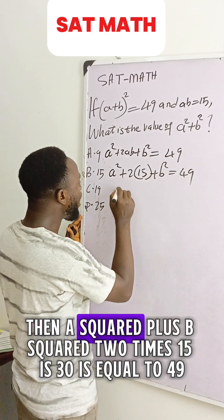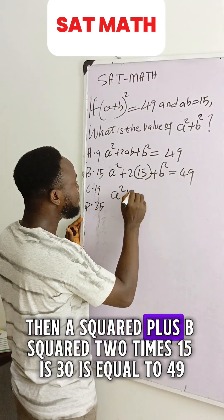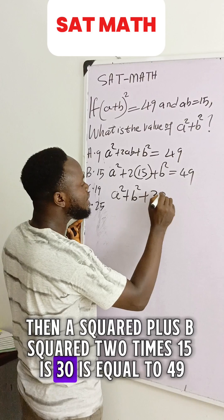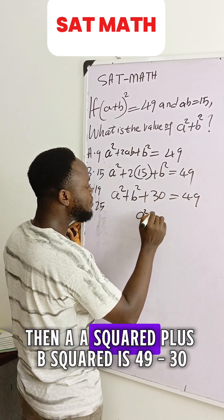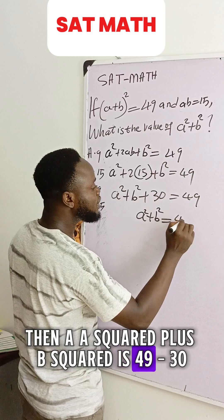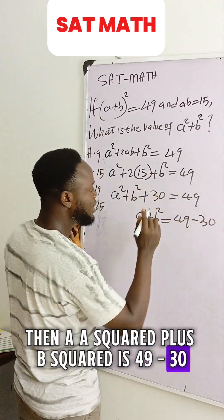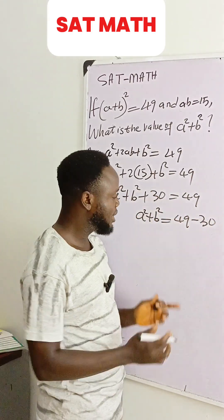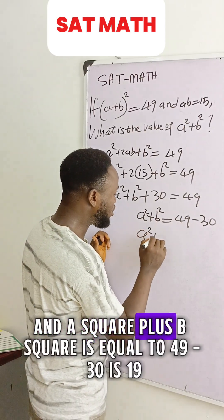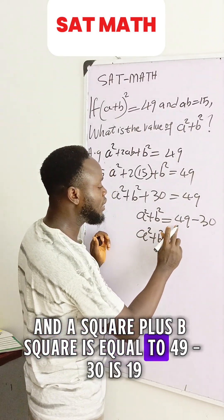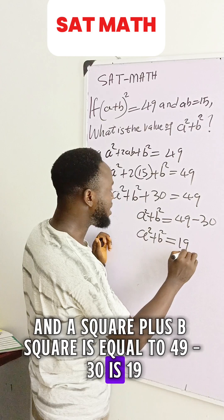Then a squared plus b squared, 2 times 15 is 30, is equal to 49. Then a squared plus b squared is 49 minus 30, that is collection of like terms. This is what they said you should find. And a squared plus b squared is equal to 49 minus 30, which is 19.